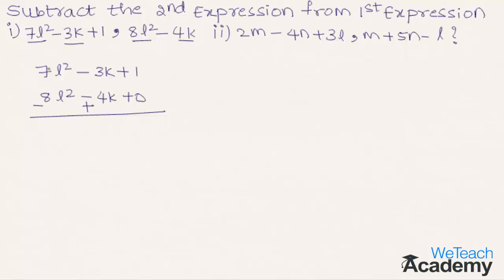So 7l² minus 8l² is minus l², and minus 3k plus 4k is plus k, and 1 plus 0 is plus 1. So we get the result as minus l² plus k plus 1.